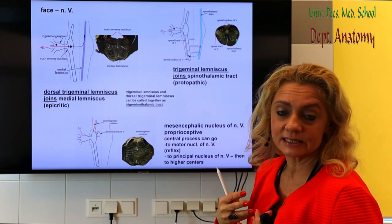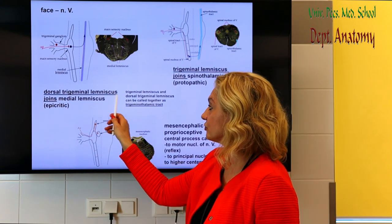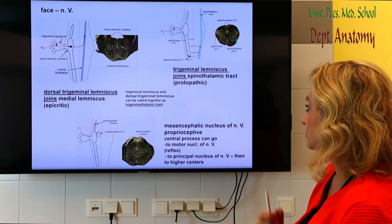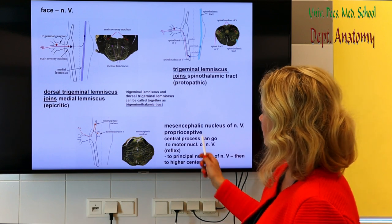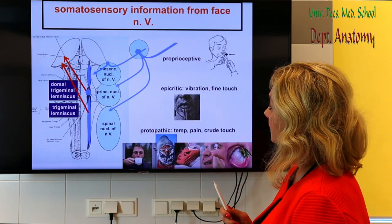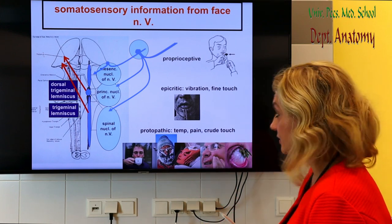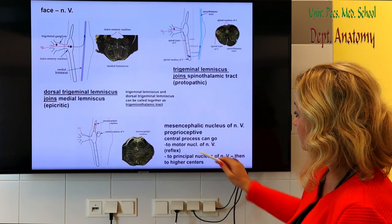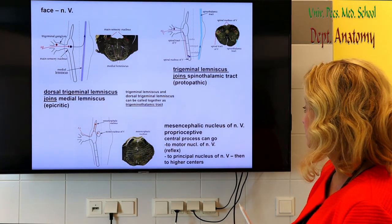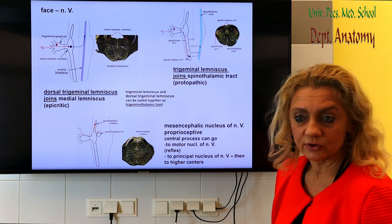The epicritic and protopathic pathways join the main ascending pathways from the spinal cord: the trigeminal lemniscus joins the spinothalamic tract, and the dorsal trigeminal lemniscus joins the medial lemniscus. Together these pathways can be called trigeminal thalamic pathways or tracts, because they end in the thalamus. The mesencephalic nucleus of the trigeminal nerve, as mentioned, is pseudounipolar: the peripheral process brings information from the masseteric or other mastication muscles, and the central process can either close a monosynaptic reflex via the motor nucleus of the trigeminal nerve, or end in the principal nucleus for conscious proprioceptive information.